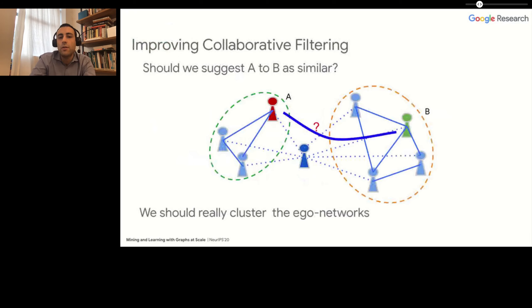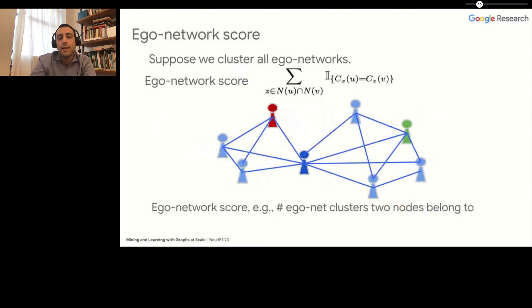But common neighbors, just the count of common neighbors, will say that these two nodes are related. What we show in our paper is that by analyzing the clusters of the ego network, we can define a better similarity score.